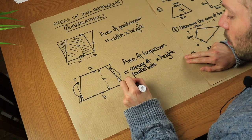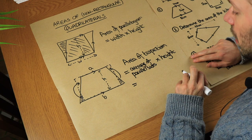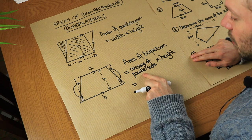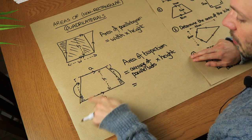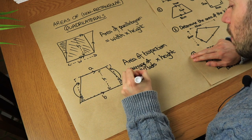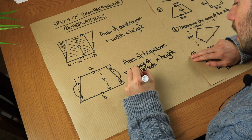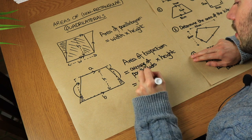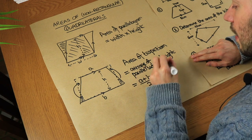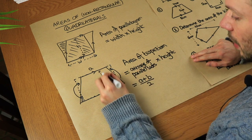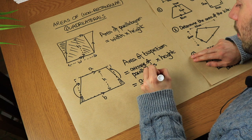Now we could use these letters to form a formula. To find the average of the parallel sides a and b, we add them and divide by two. That's how you find the average, and then you multiply by the height between them.